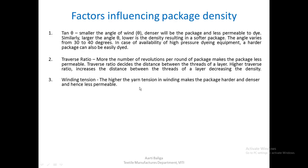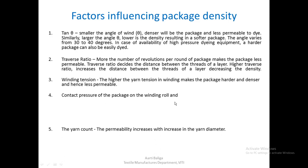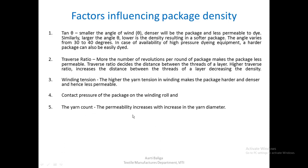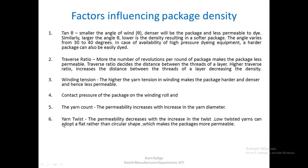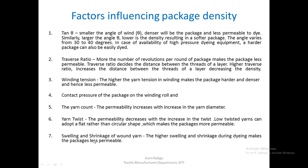Winding tension: higher tension in winding makes the package harder, denser, and hence less permeable. Contact pressure of the package on the winding roll and the yarn count also affect permeability — permeability increases with the increase in yarn diameter. Yarn twist also affects to a large extent; permeability decreases with the increase in twist. Low twisted yarns can adopt a flat rather than circular shape, which makes the packages more permeable. The higher swelling and shrinkage of the wound yarn during dyeing makes the package less permeable.